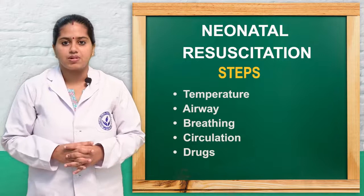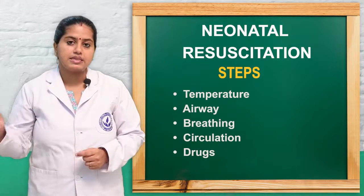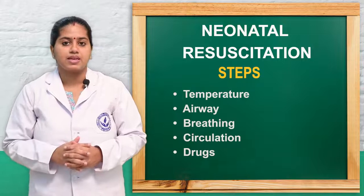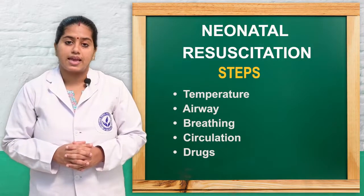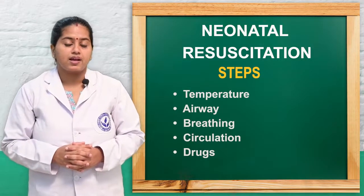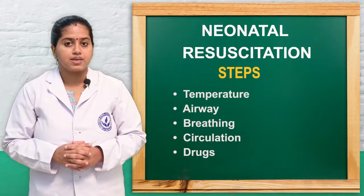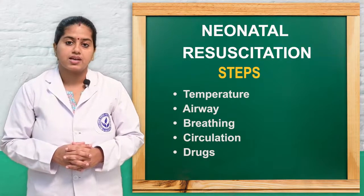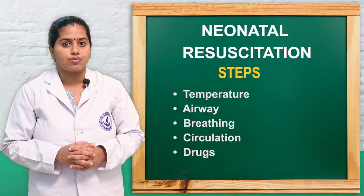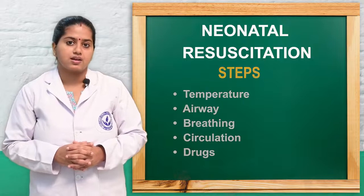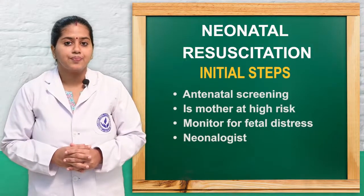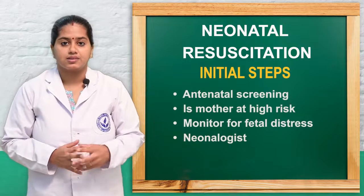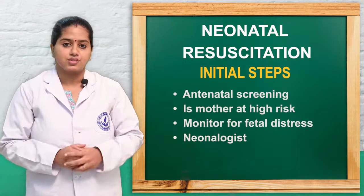Next we will see the steps. You can remember them as T-A-B-C-D. T means temperature has to be maintained first. Second is A for airway. Third is B for breathing. Fourth is C for circulation. And D is for drugs. Next we will see what are the initial steps that come under resuscitation.